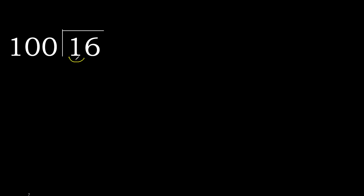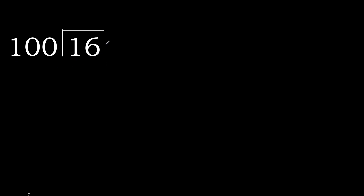16 divided by 100. 1 is less, therefore next. 16 is less, therefore next. There is no number, therefore complete — always complete with 0 here. 0 point.